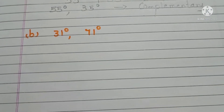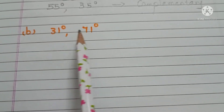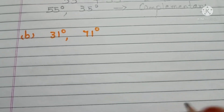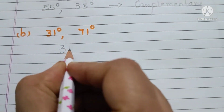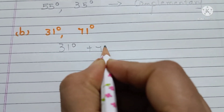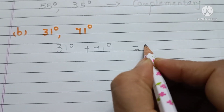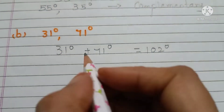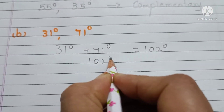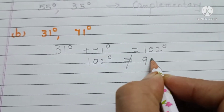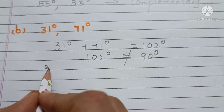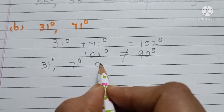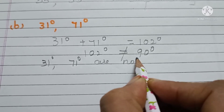Okay. Next, 31 degrees and 71 degrees. Let us add 31 and 71. 31 degrees plus 71 degrees, that is equals to 102 degrees, which is not equals to 90 degrees. So, 31 degrees and 71 degrees are not complementary angles.